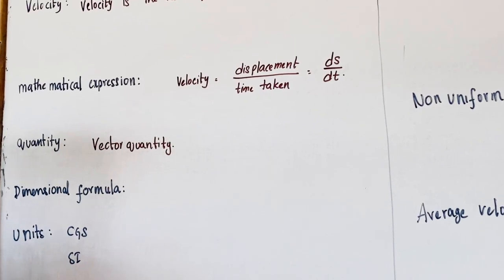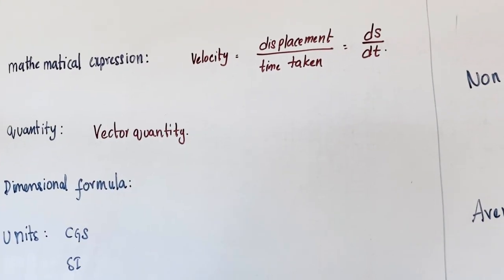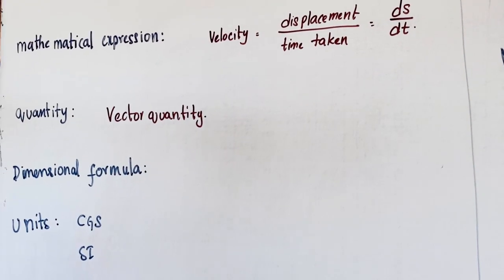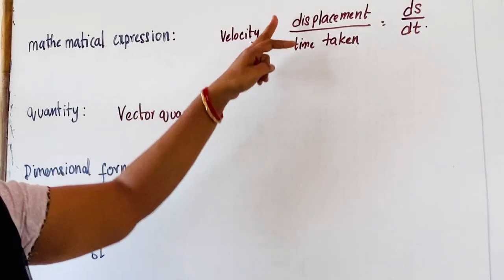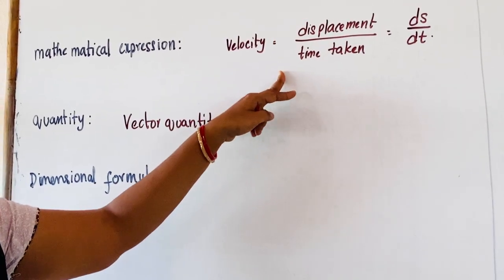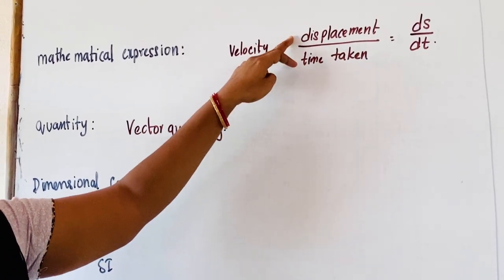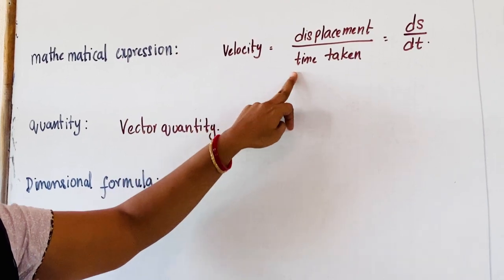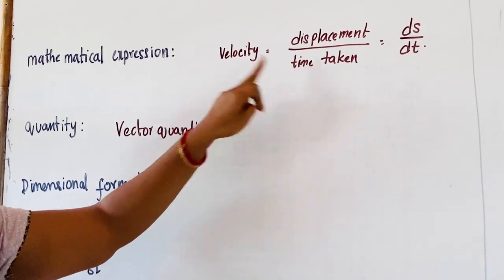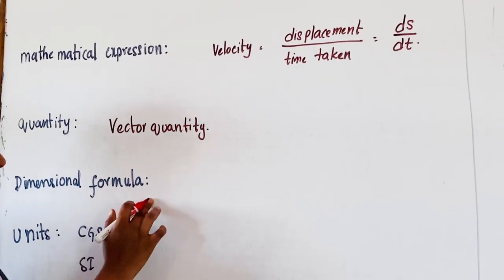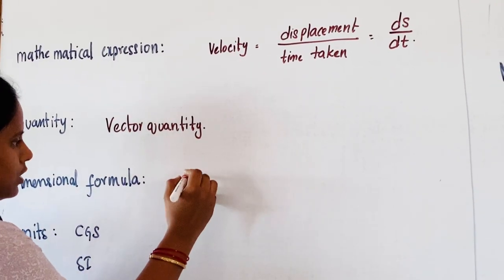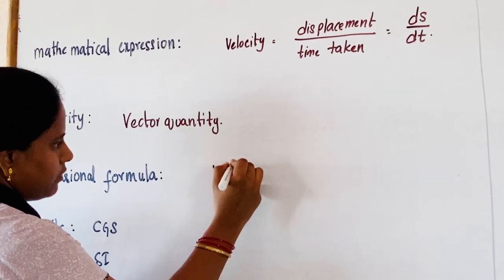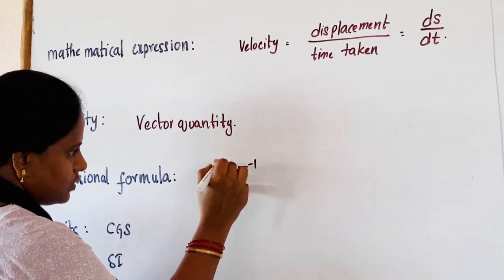Now we are going to see the dimensional formula for velocity. Velocity means displacement by time. The dimensional formula for displacement is L, and for time it is T. So the dimensional formula for velocity is L T to the power minus 1.